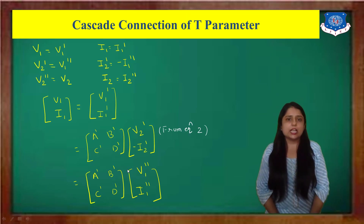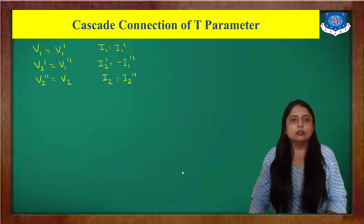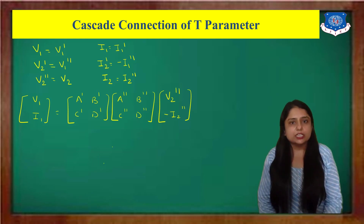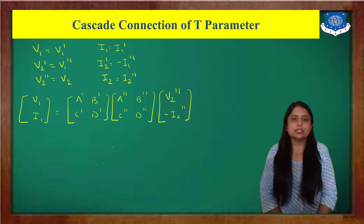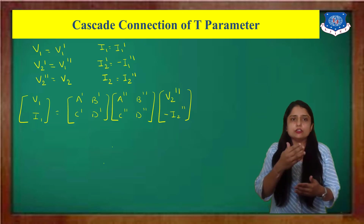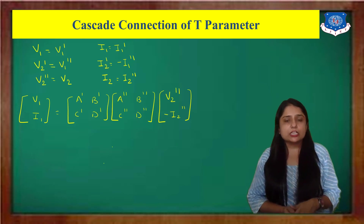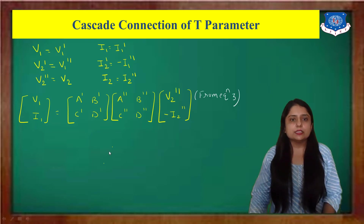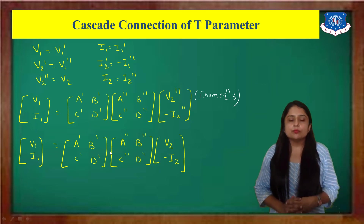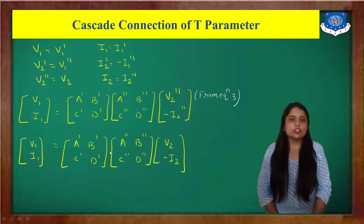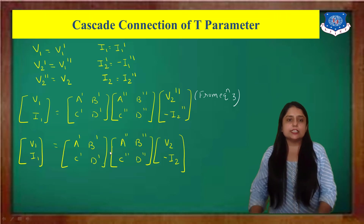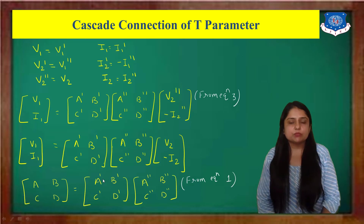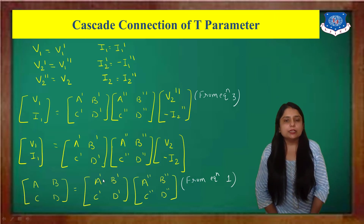So we can write: [V1-dash, I1-dash] = [A-dash, B-dash; C-dash, D-dash] × [V2-dash, -I2-dash]. We can then replace V2-dash by V2 and -I2-dash by -I2, and substitute the N-double-dash parameter equation. Comparing with equation 1, we find that [A, B; C, D] = [A-dash, B-dash; C-dash, D-dash] × [A-double-dash, B-double-dash; C-double-dash, D-double-dash].